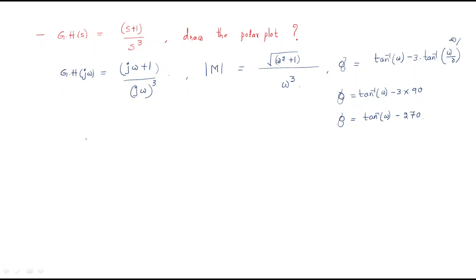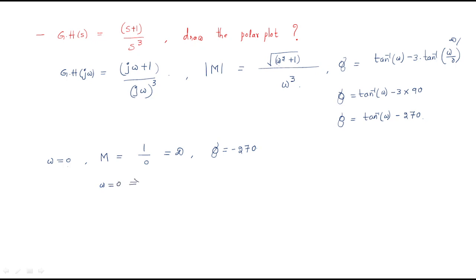For zero frequency, substitute ω=0 into the magnitude: √(0²+1)/0 = 1/0, which becomes infinite. For the phase at ω=0: tan⁻¹(0) − 270° = −270°. Therefore, at ω=0, the magnitude is infinite at an angle of −270°.